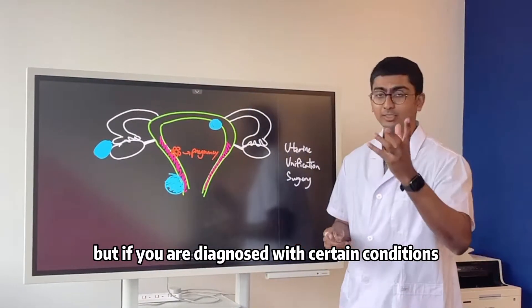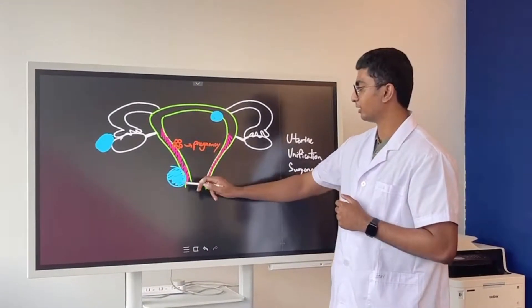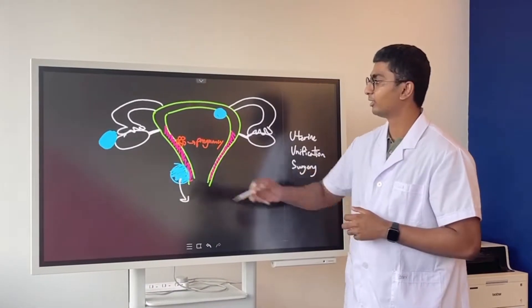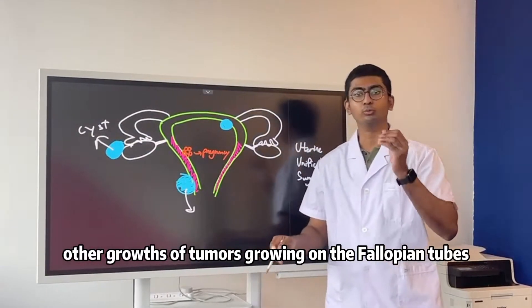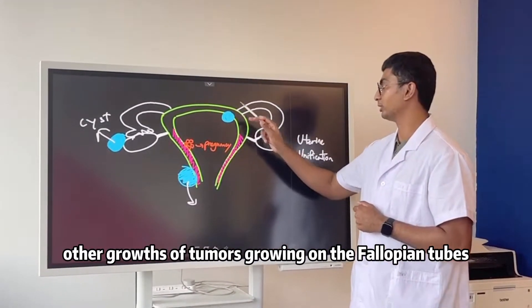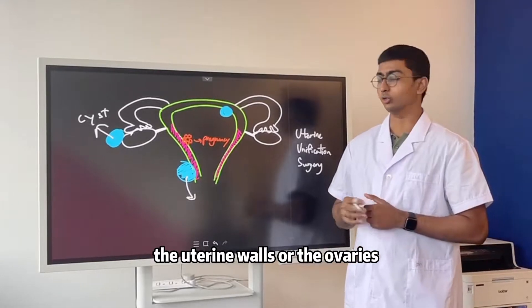But if you are diagnosed with certain conditions such as fibroids, cysts, ovarian cysts, or any other growths or tumors growing on the fallopian tubes, the uterus or the ovaries,